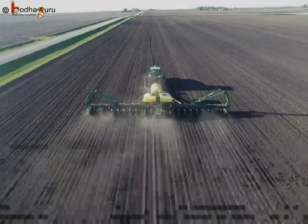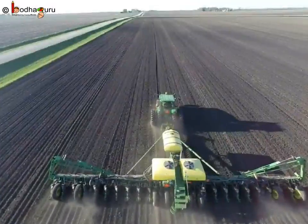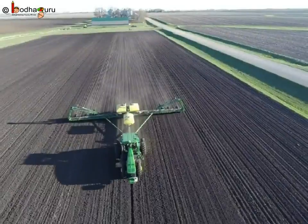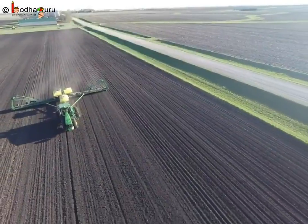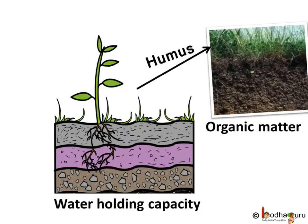Hello everyone. We already know about the composition of soil. So, let us understand what makes the soil fertile. It goes without saying that the capacity of holding water and nutrients is the most crucial criterion for a fertile soil. And soil organisms help in building up humus through decomposition of plant residue. We can say humus is soil's nutrient reservoir.